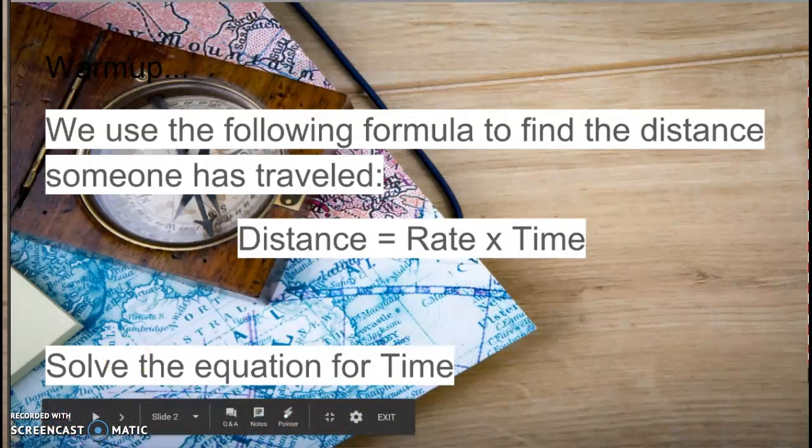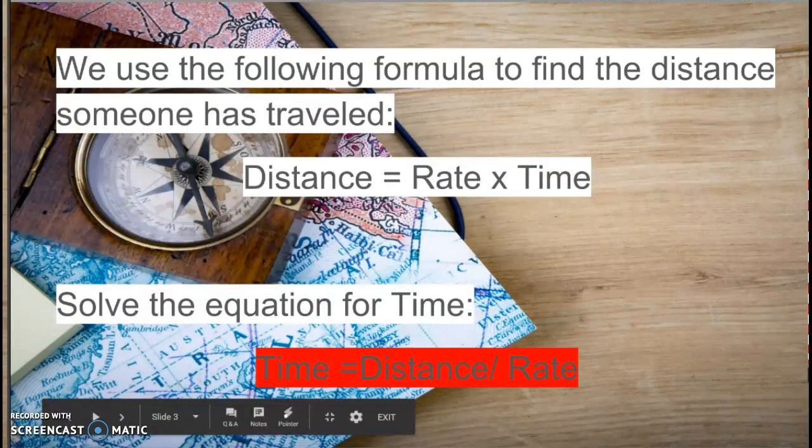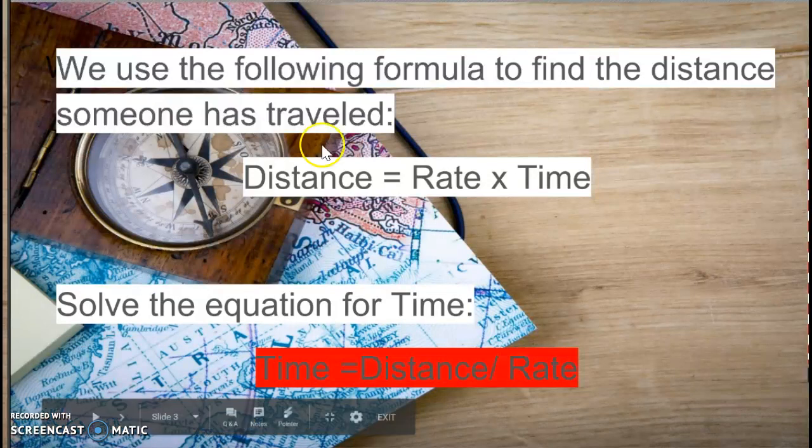Alright, now that you've had some time to do that, let's see what it is. Time equals distance divided by rate. We can solve this formula just by dividing both sides by rate.